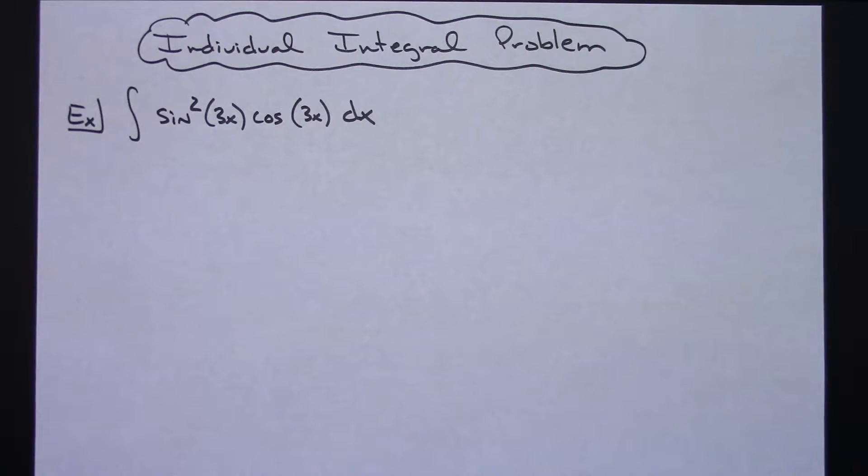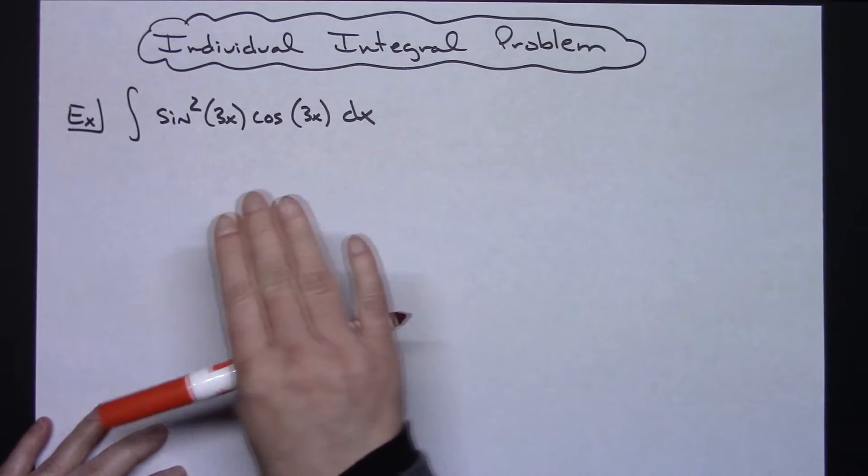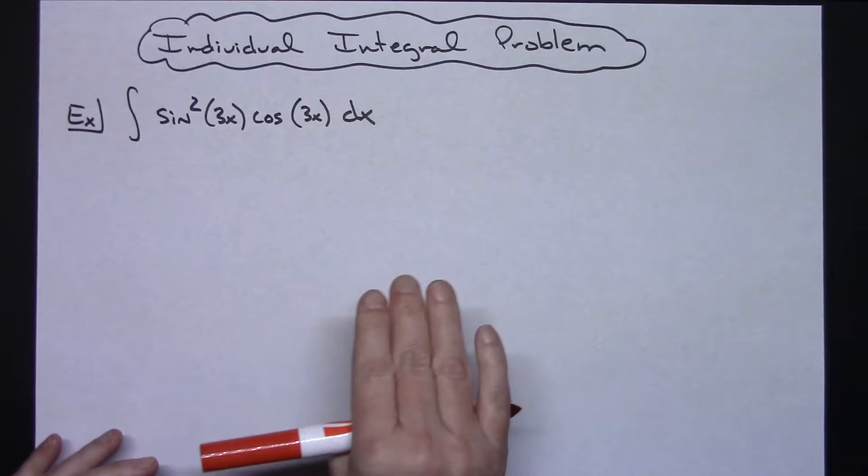In this example I'm going to do an individual integral problem. It's going to be a basic u-substitution, but the reason I'm doing this is because some people look at something like this and they have a hard time deciding what their u is going to be.